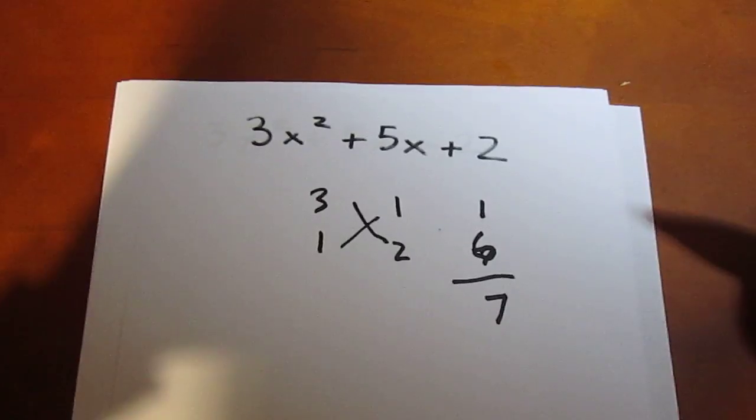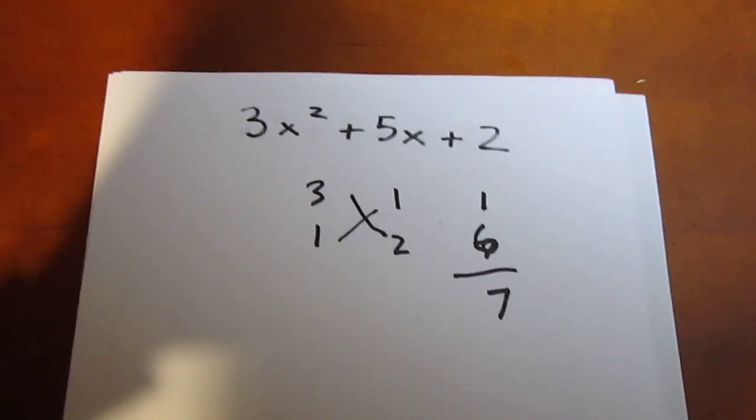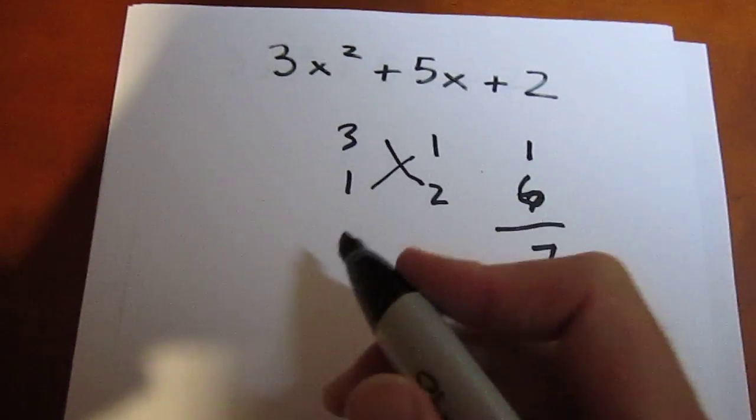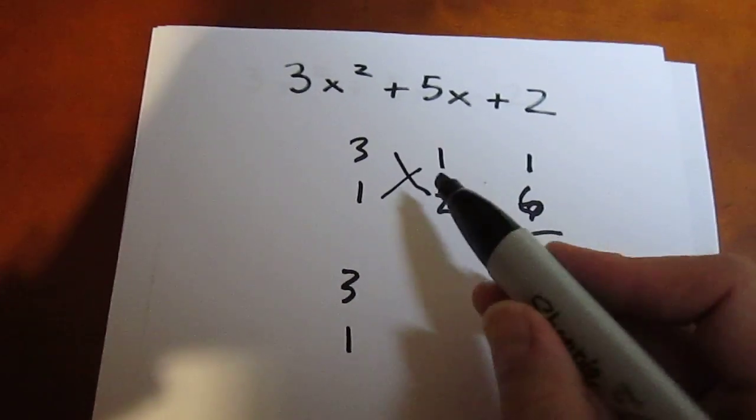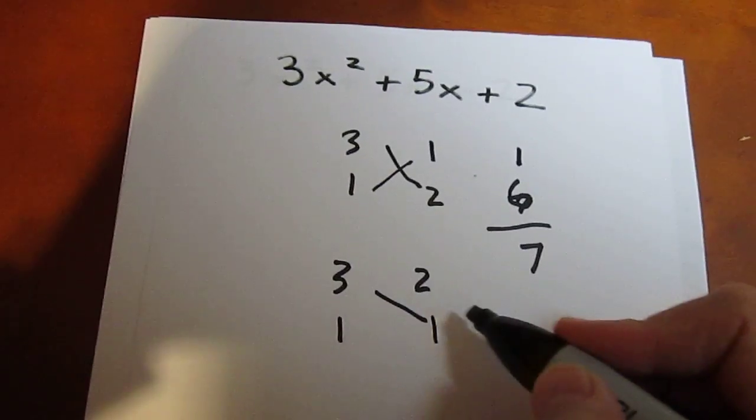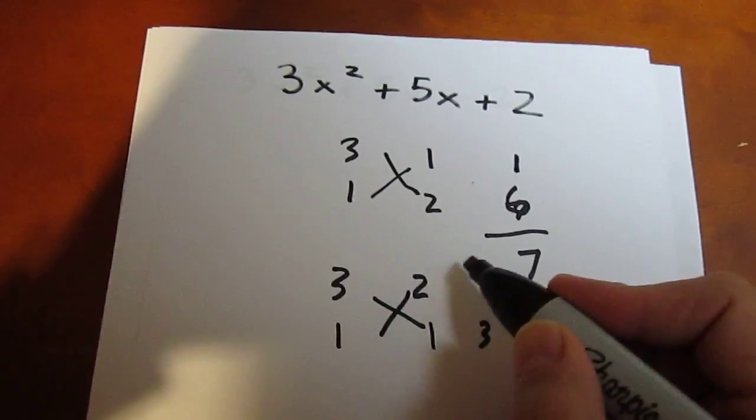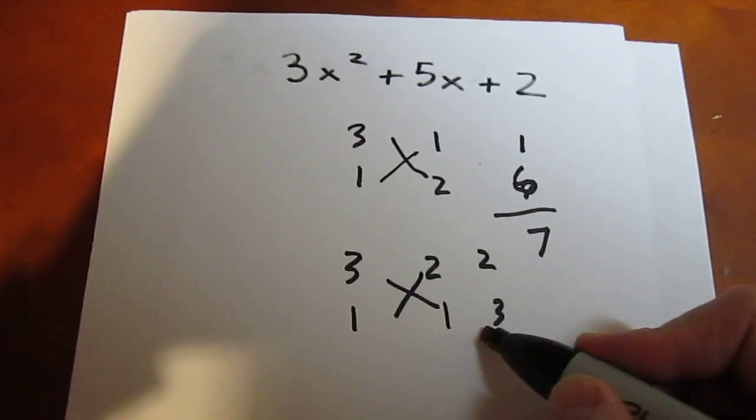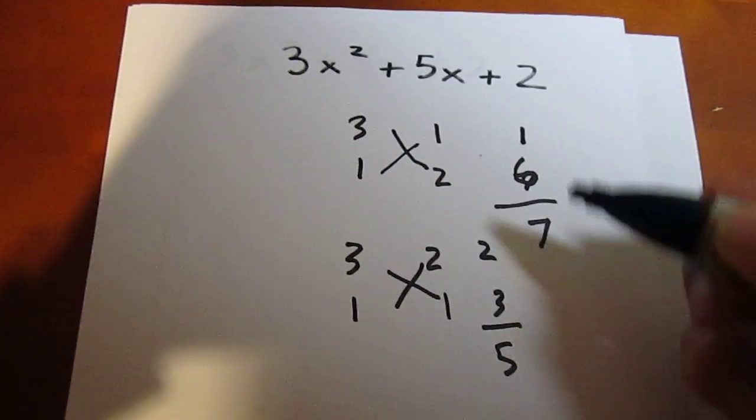So I have to try a different second column. Let's try 3 and 1 still in the first. Instead of 1 and 2, we'll try 2 and 1. 3 times 1 is 3. 1 times 2 is 2. 2 plus 3 is 5. I wanted it to be 5.